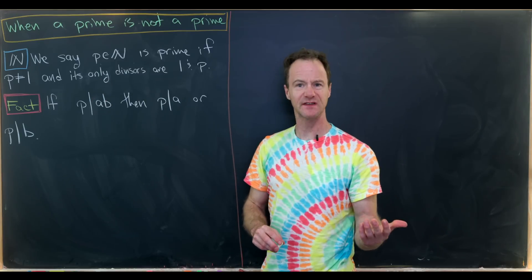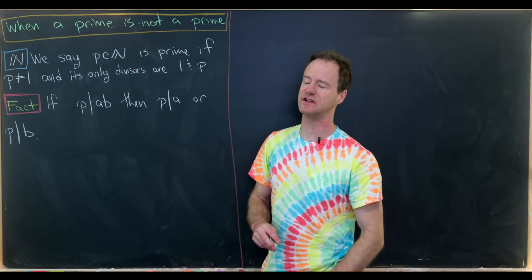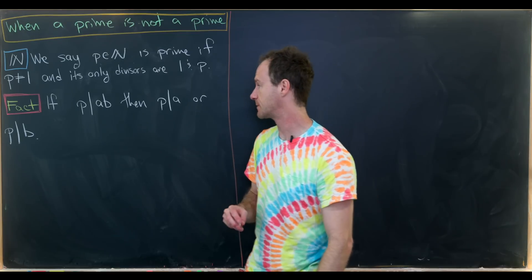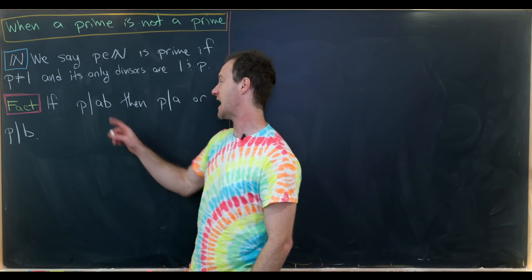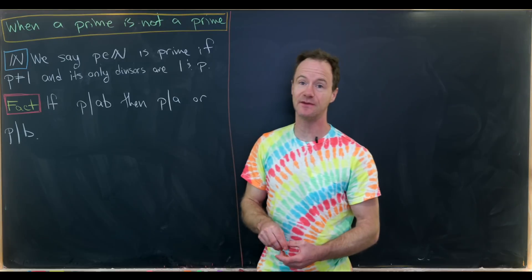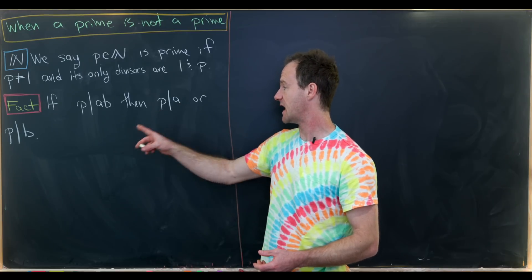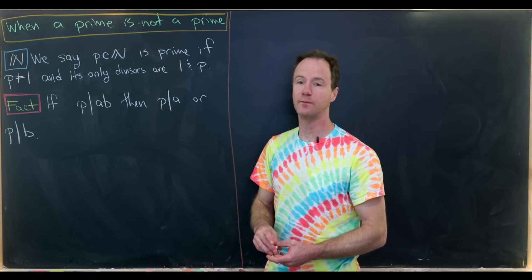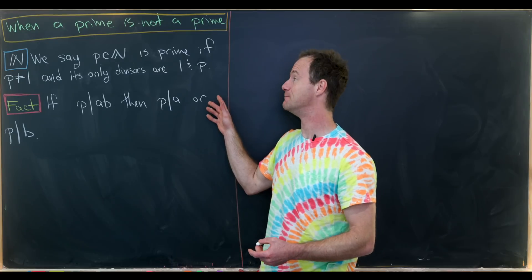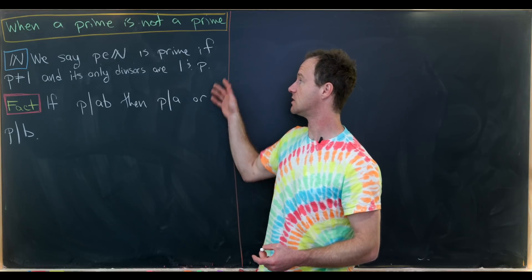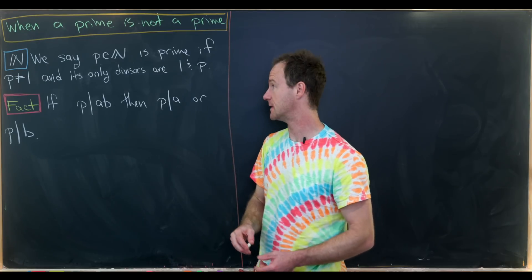We have this fact, which is fairly easy to prove, although we won't prove it here: if P divides A times B, then P divides A or P divides B. This is an immediate result of the primeness of P.